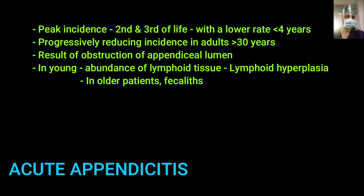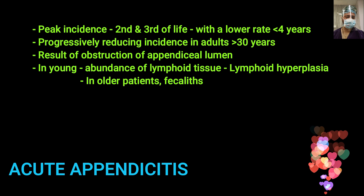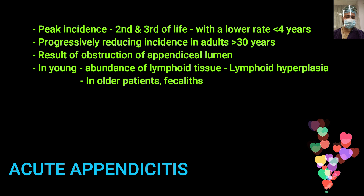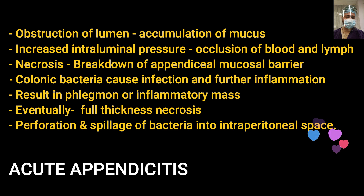The peak incidence of appendicitis is in the second and third decade of life, with lesser incidence before four years of age, and incidence also decreases after 30 years. The pathology behind appendicitis is obstruction of the appendiceal lumen. In young individuals there is an abundance of lymphoid tissue, leading to lymphoid hyperplasia after minor illnesses like the common cold or cough. In older individuals, the usual obstruction is caused by fecaliths.